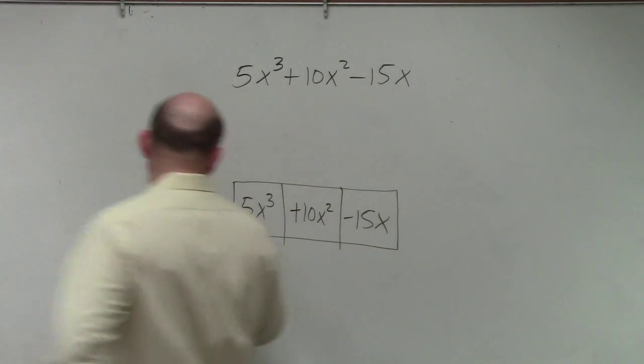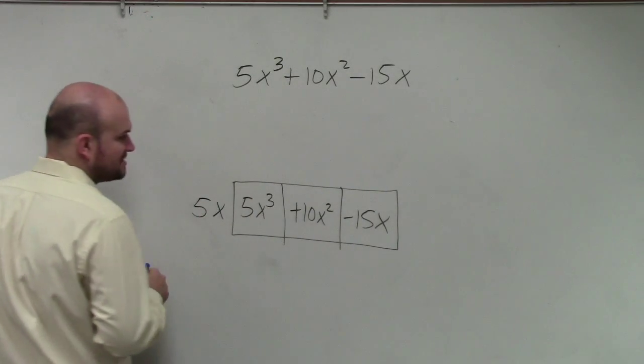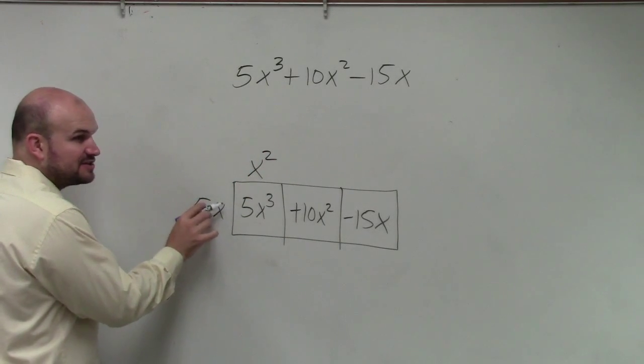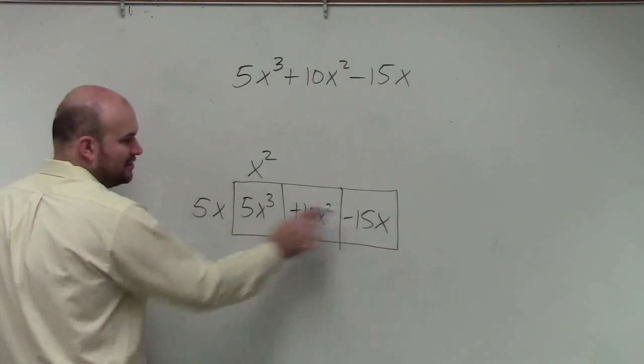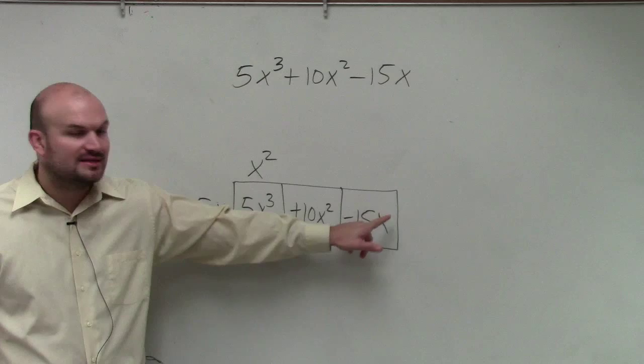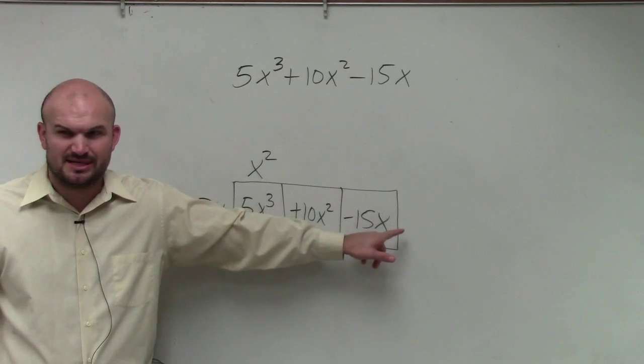Yeah, 5x. Right, so you'd say, this could be 5x, and this could be x squared. I can't use 5x squared here and x here, because you can't have x squared. This has to be the same power as the lowest power of your areas. Does that make sense?